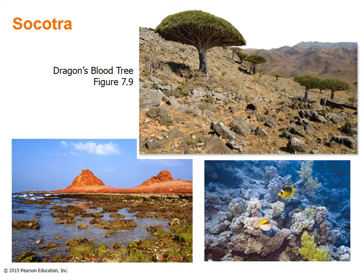Socotra is an island located about 230 miles south of Yemen in the Indian Ocean. Separated for millions of years from the Arabian Peninsula, Socotra's environment evolved in isolation. It holds about 850 unique plants, 30% of which are found nowhere else on Earth, including the dragon's blood tree. The island is often referred to as the Galapagos of the Indian Ocean, with equally rare coral reefs and unusual fish populations.